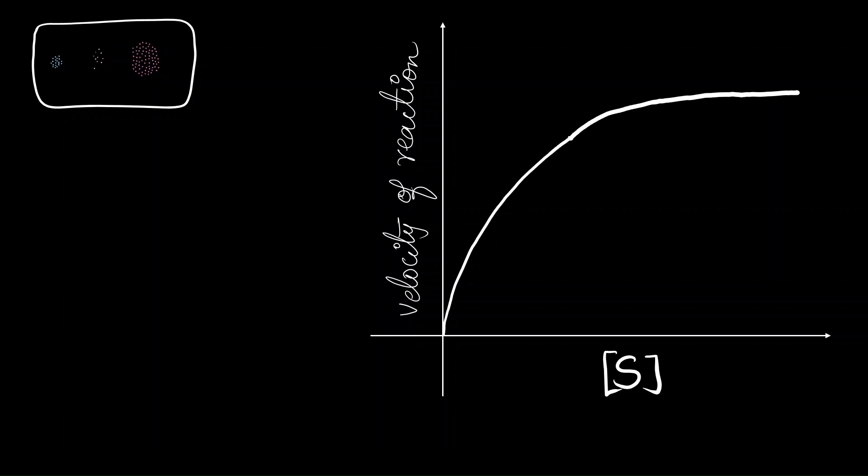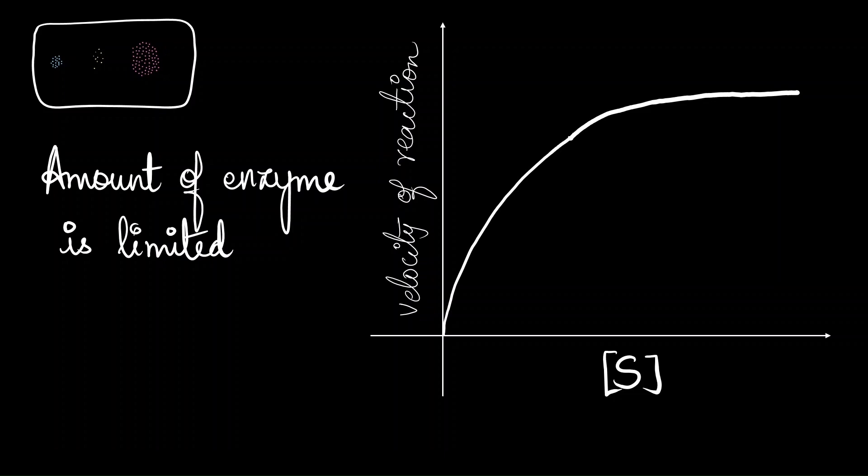The reason we see this particular trend is because the amount of enzyme molecules are limited. And we notice that as the reaction proceeds, there is not even a single moment where the enzyme molecules are left free. Because once the product is formed, that active site is immediately replaced by a new substrate. Thus, at one point, the reaction ultimately reaches its maximum velocity, which we call as Vmax. This represents the theoretical upper limit of the speed of the particular enzyme.